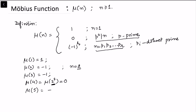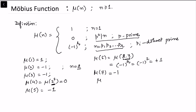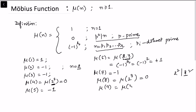μ(5) is a prime, so this value is −1. μ(6): the prime factorization is 2×3, so n is a product of 2 distinct primes, giving (−1)² = +1. μ(7) is a prime, so this value is −1. μ(8): since 8 = 2³, we have 2² = 4 dividing 8, so 8 is not square-free, giving 0. μ(9) = μ(3²) = 0. μ(10) = μ(2×5): there are 2 primes, so this value is +1.